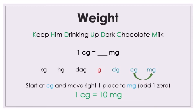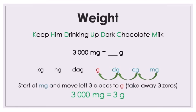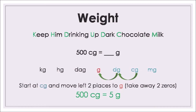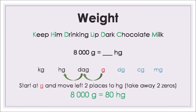Going the other direction: 3,000 milligrams is how many grams? Go to milligrams, move three places to the left — divide by 1,000 or take away three zeros. 3,000 milligrams is 3 grams. Remember, going from small to large you get smaller numbers. 500 centigrams is how many grams? Go to centigrams, move to the left, divide by 100 — 500 centigrams is 5 grams. 8,000 grams is how many hectograms? Move two places to the left, divide by 100 — 8,000 grams is 80 hectograms.